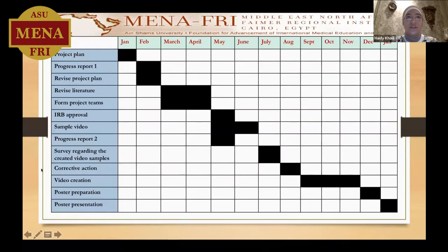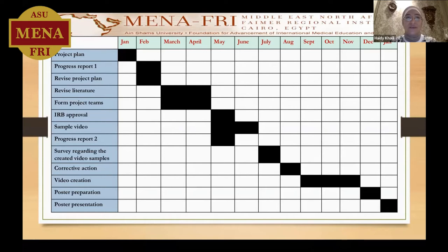My Gantt chart started in January 2022 with the project plan and a progress report in February. I then revised the project plan with my colleagues after the progress report and during the online session. March and April were designated to revise the literature regarding my project and form the project teams.